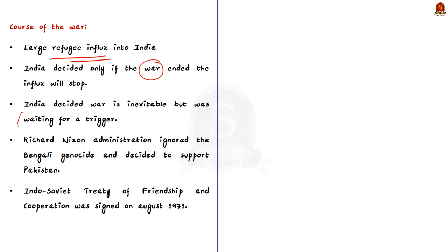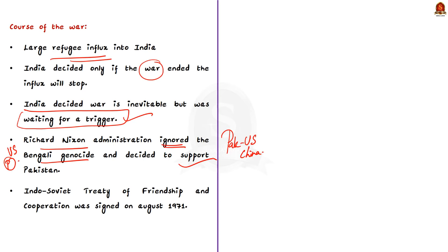While this was happening, Pakistan was getting support from the United States and China. Richard Nixon, then President of the United States, ignored the Bengali genocide being committed by the Pakistan military and desired to support Pakistan by sending arms and ammunition. This alarmed Indian leaders, so India deviated from its position of non-alignment and signed the Indo-Soviet Treaty of Friendship and Cooperation in August 1971. India was now waiting for the right trigger to send its troops into Bangladesh.